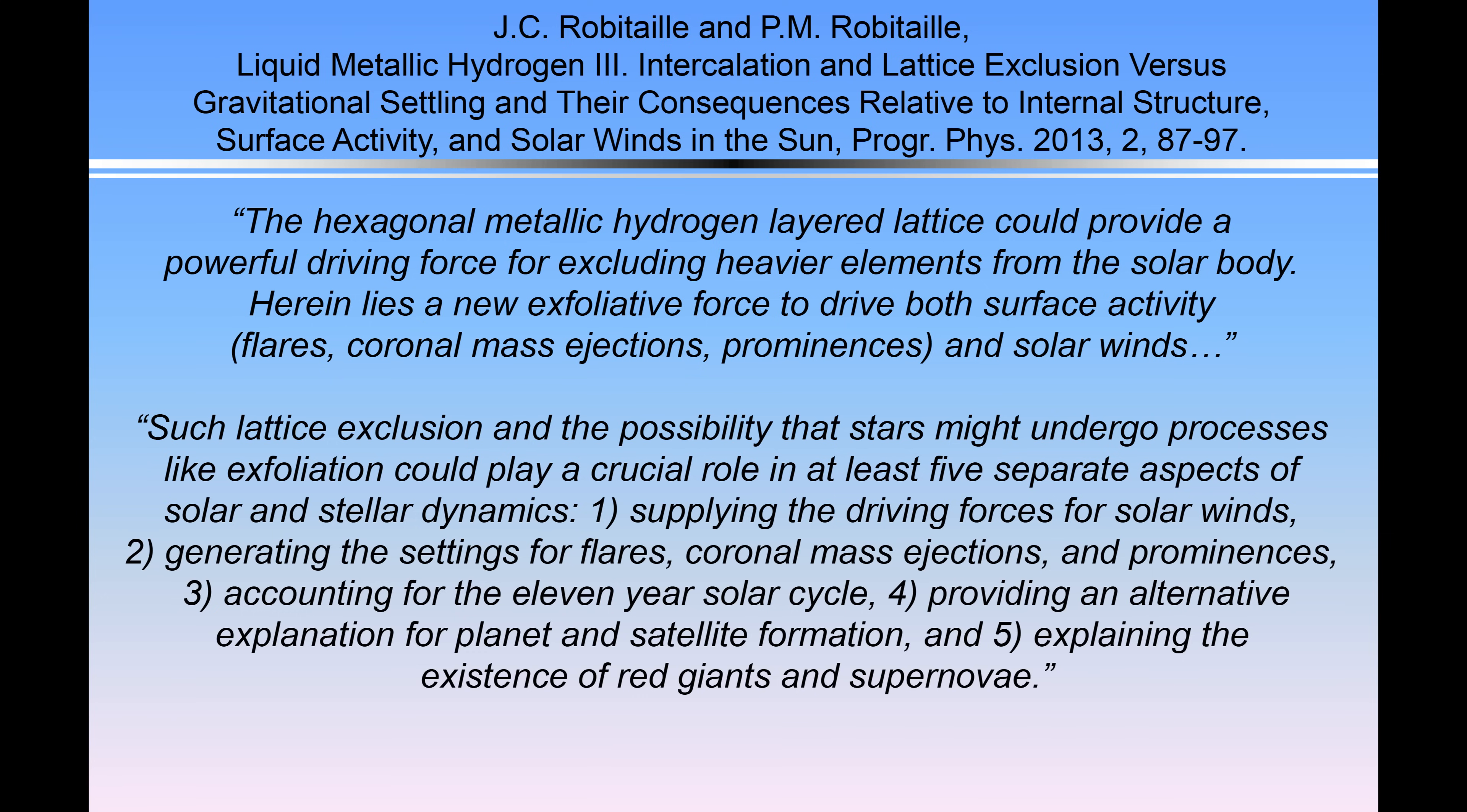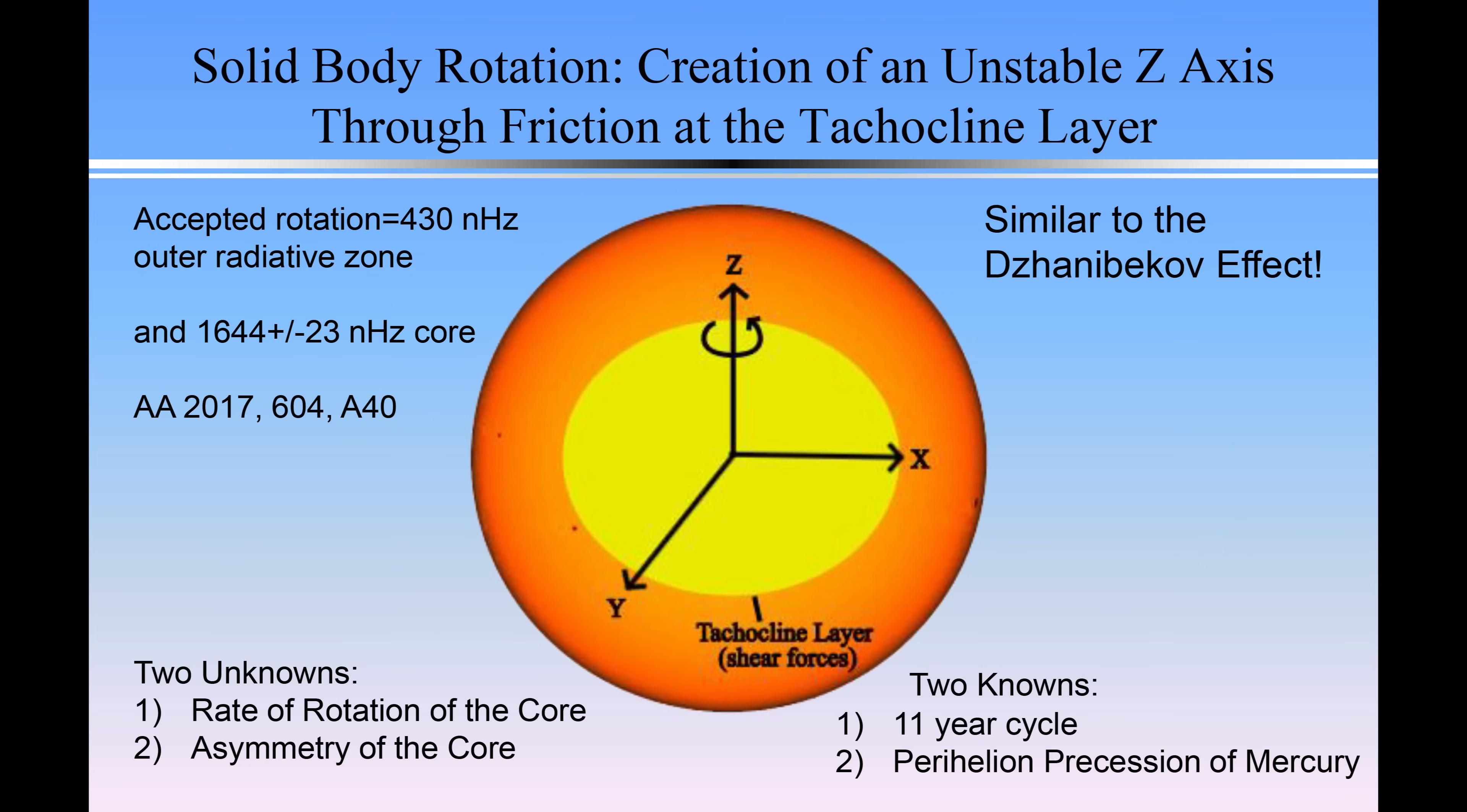It can supply the driving force for solar winds. It can generate the settings for flares, coronal mass ejections, and prominences. It can account for the 11-year cycle and provide an alternative explanation for planet and satellite formation. And it can explain the existence of red giants and supernova. For planets, what I'm saying is that when a star forms, you have different material inside the star, and as you start forming a lattice, some material will be immiscible with that lattice and it gets expelled.